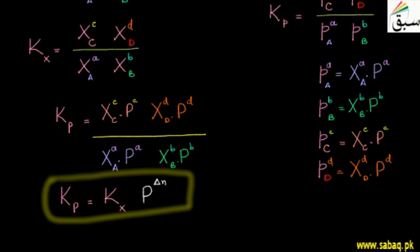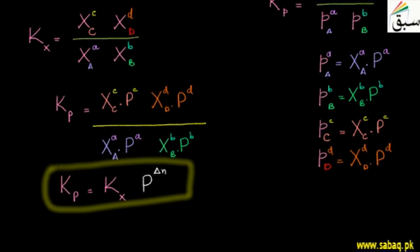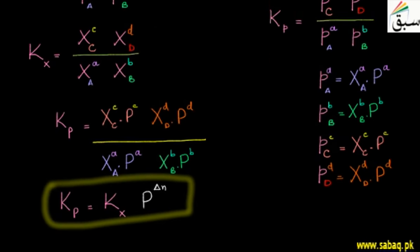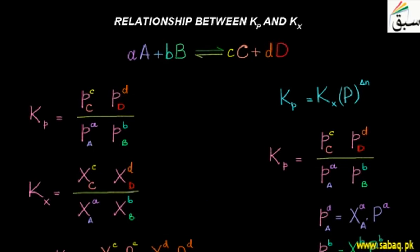Therefore, the final expression is: Kp = Kx · P^(delta N). This is exactly the expression we had before. We have now proved the relationship between Kp — equilibrium constant in terms of pressure — and Kx — equilibrium constant in terms of mole fractions.